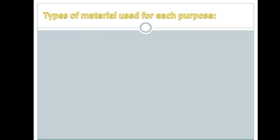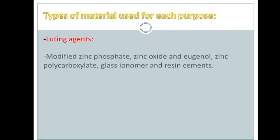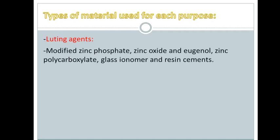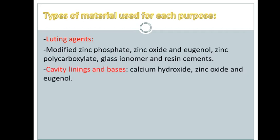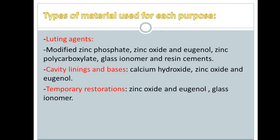Next slide: types of materials used for each purpose. For luting agents, we have modified zinc phosphate, zinc oxide eugenol, zinc polycarboxylate, glass ionomer, and resin cements. So these are examples of luting agents.